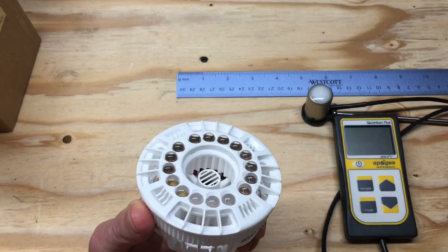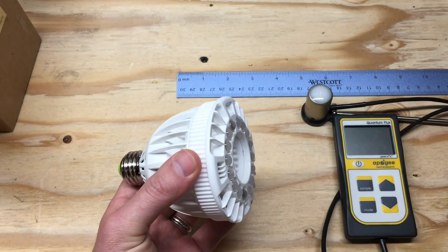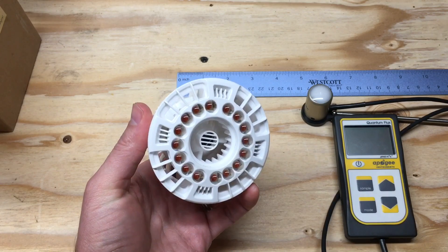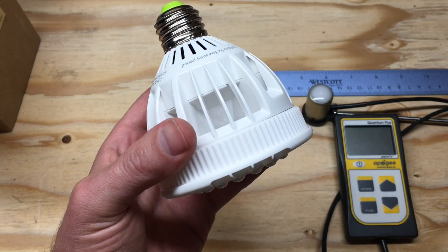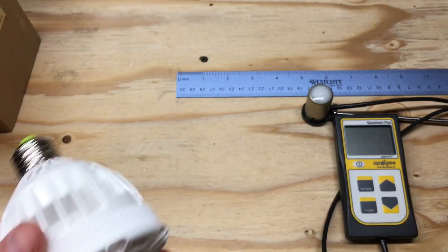I just want to go over some of the specs now. This light only draws 15 watts and it'll cover about 2.8 square feet if you mount it about 12 to 20 inches above the plants.